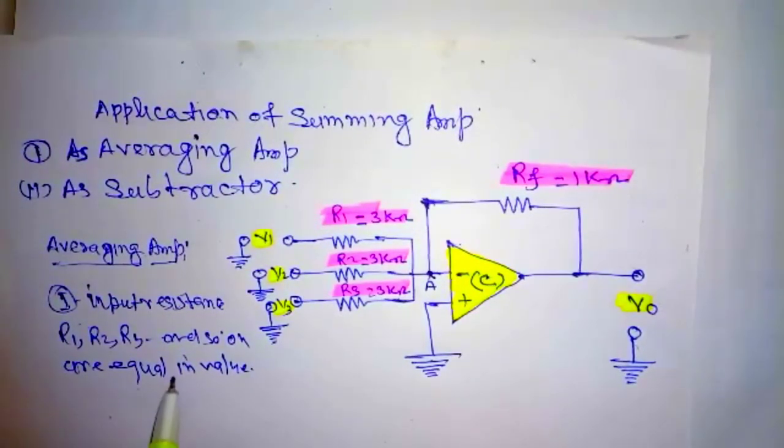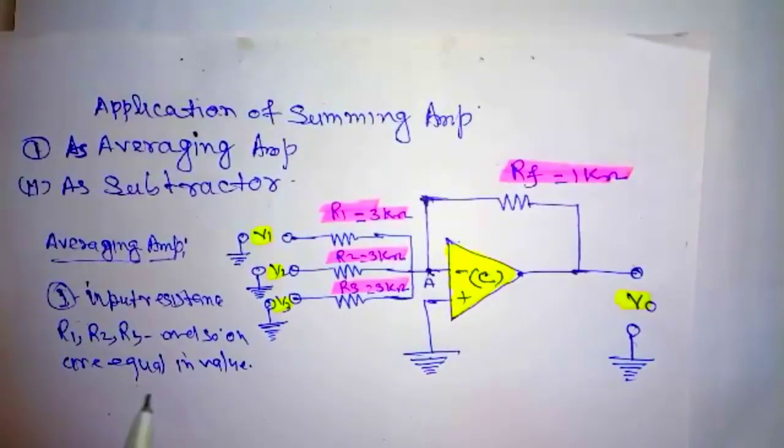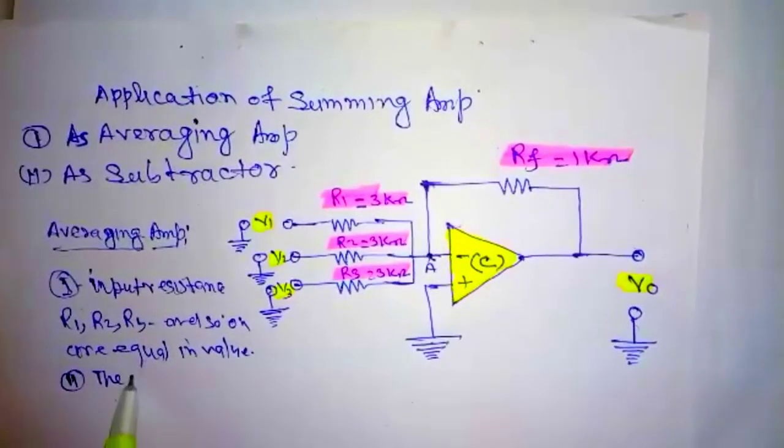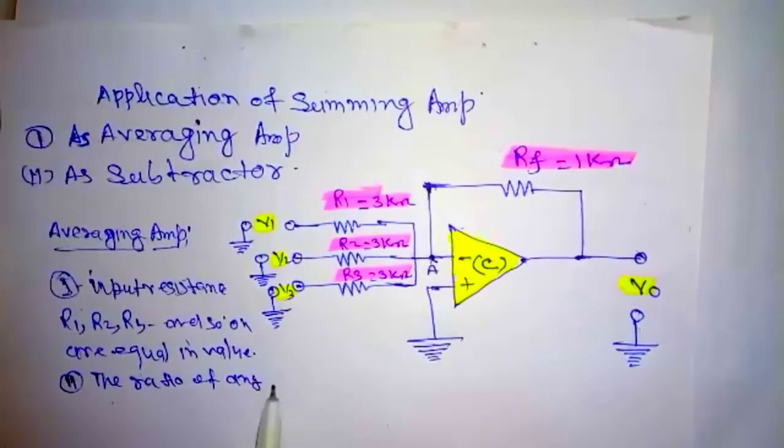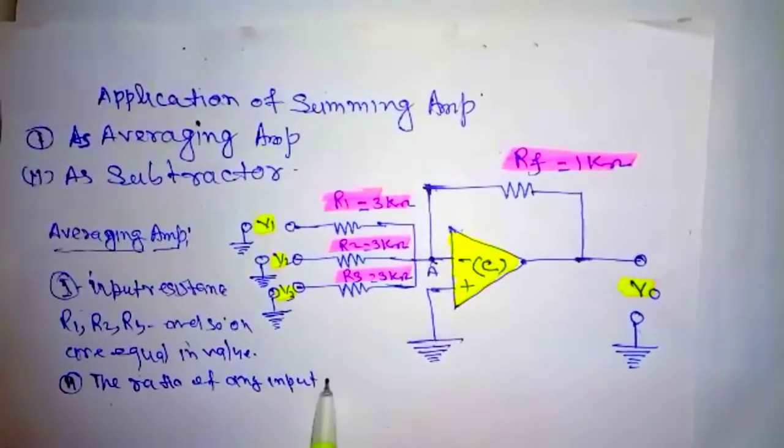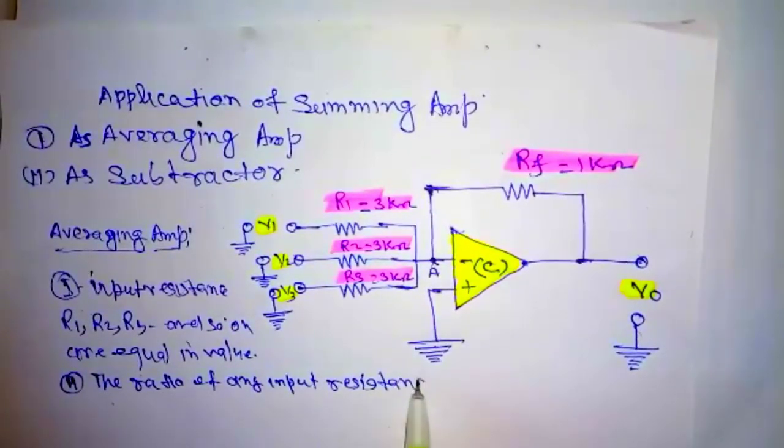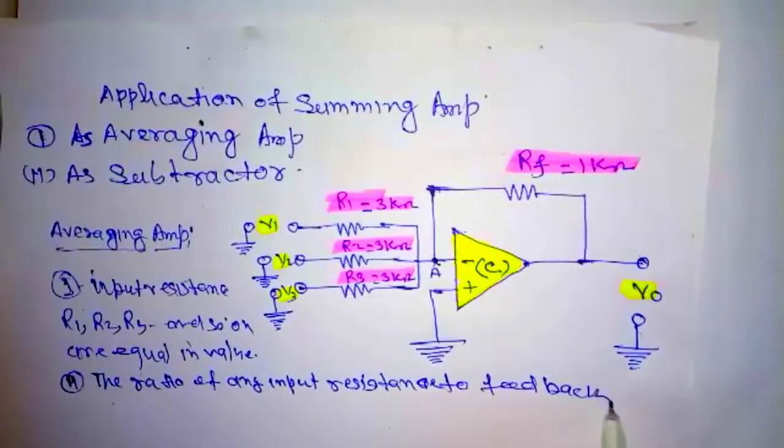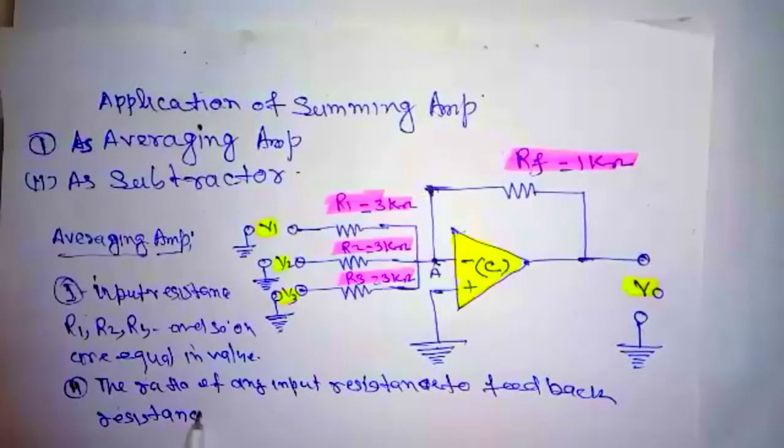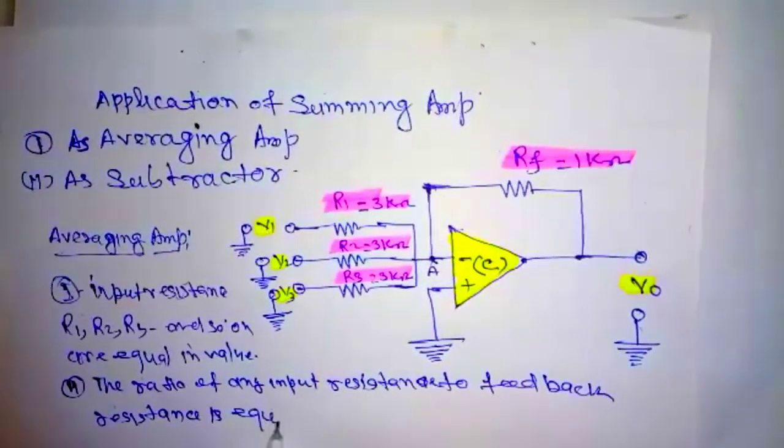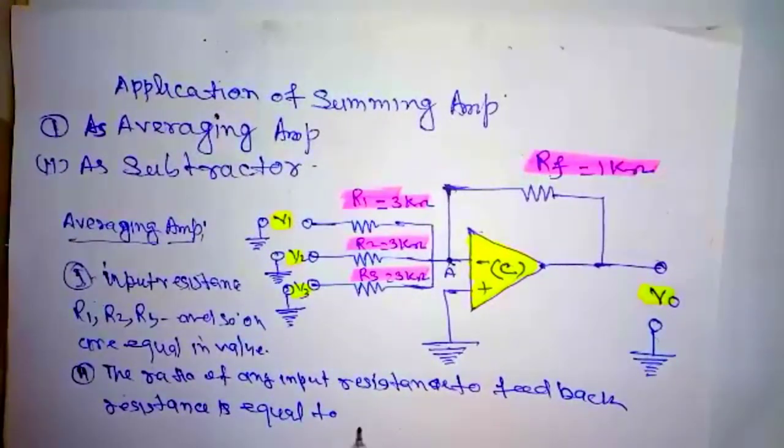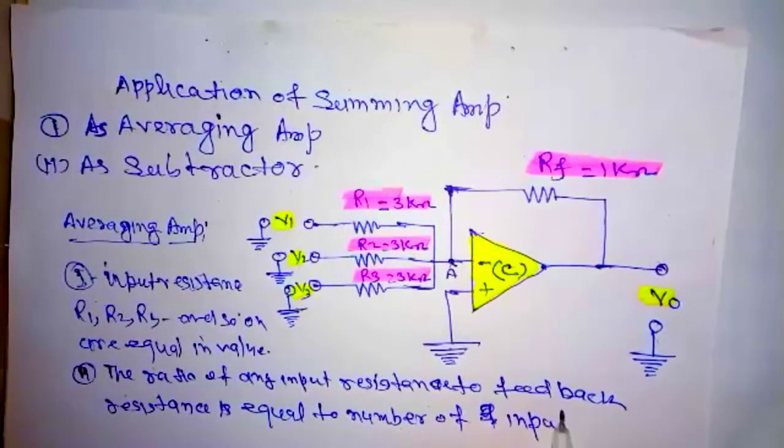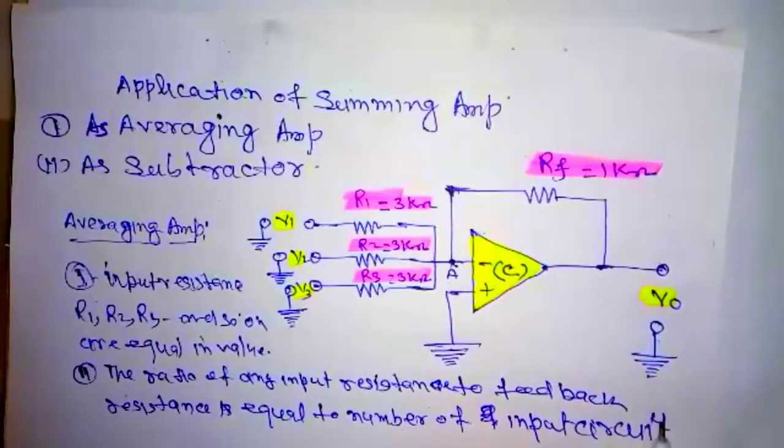The ratio of input resistance to feedback resistance is equal to the number of input circuits. So these two conditions can be fulfilled.